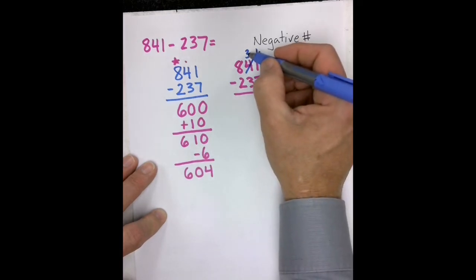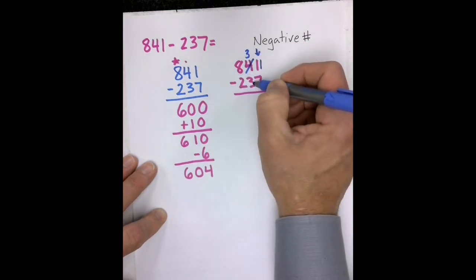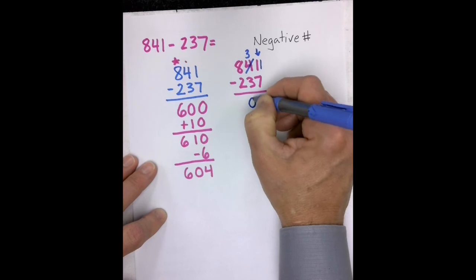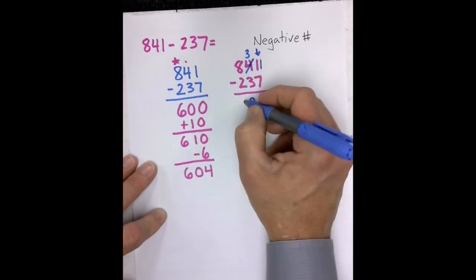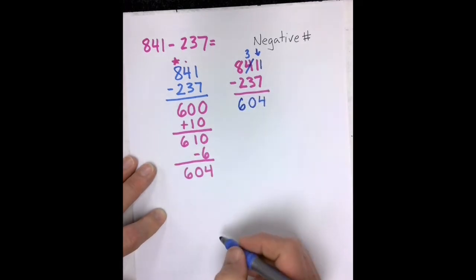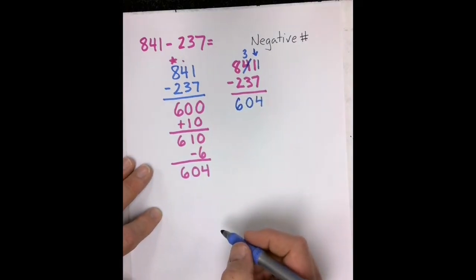Now I have 3 tens, and I'm subtracting 3 tens, which is 0. I have 8 hundreds, which I'm subtracting 2 to get 6 hundreds. And I end up with my same number.